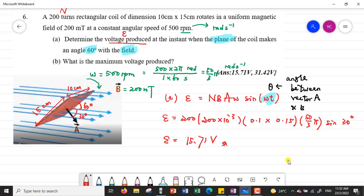We will get the value should be 15.71 V. This is the EMF produced or the voltage produced at the instant when the plane makes an angle 60 degrees with the field. Question B.